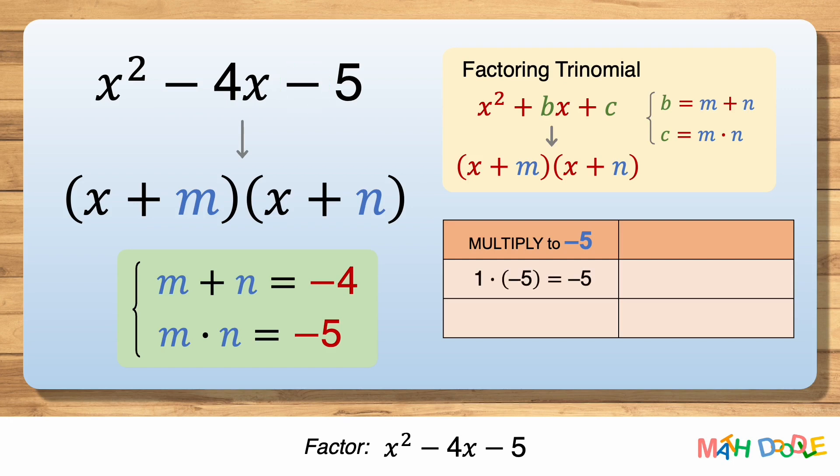1 times minus 5 is minus 5, and minus 1 times 5 is also minus 5. Now let's see which of these combinations adds to minus 4. Minus 1 plus 5 is 4, so minus 1 and 5 do not add to minus 4.